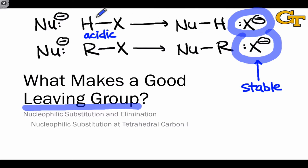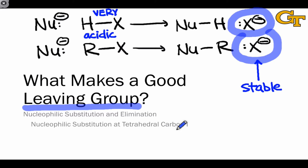For X to be a viable leaving group, it's necessary that the acid HX be very acidic — on the level of a strong acid. We'll deepen and quantify this idea in the remainder of this video.